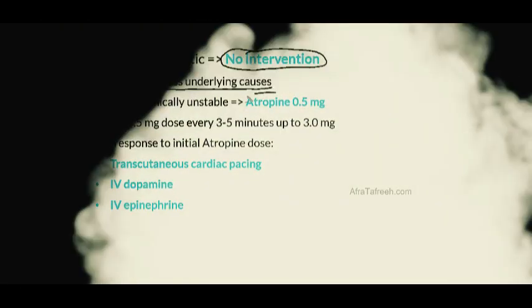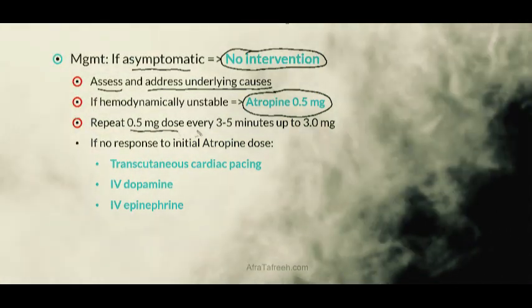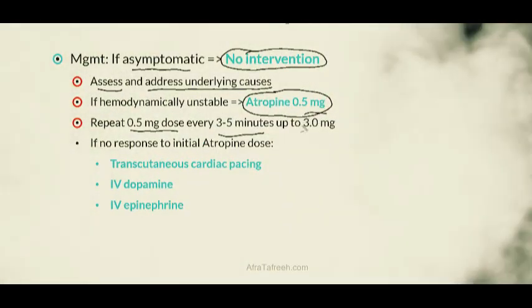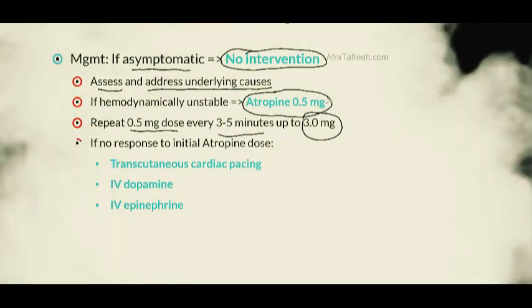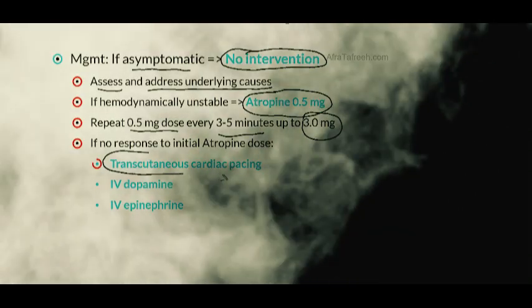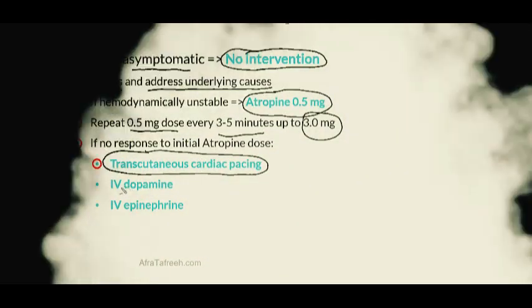The ACLS algorithm begins with atropine IV 0.5 milligrams. Atropine inhibits vagal activity input to the heart, including the AV node, resulting in an increased heart rate. This dose can be repeated every 3 to 5 minutes, up to a total of 3 milligrams. In patients who are hemodynamically unstable and not responding to the first dose of atropine, we proceed with transcutaneous cardiac pacing. Additional pressor medications including IV dopamine and IV epinephrine can also be considered.